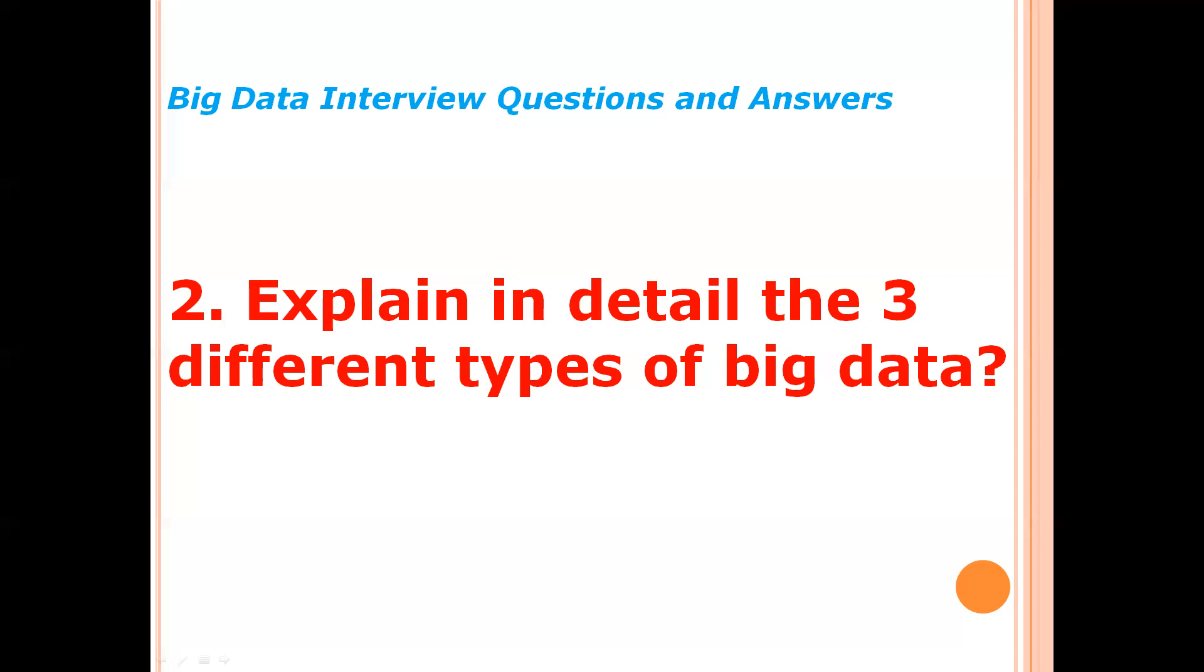Third, unstructured data. Unstructured data is the kind of data that doesn't conform to any definite schema or set of rules. Its arrangement is unplanned. Data and header, photos, videos, signals, text documents, and log files can be generally considered as unstructured data.